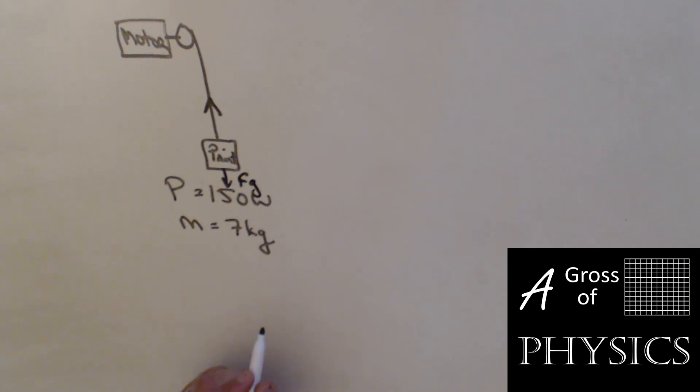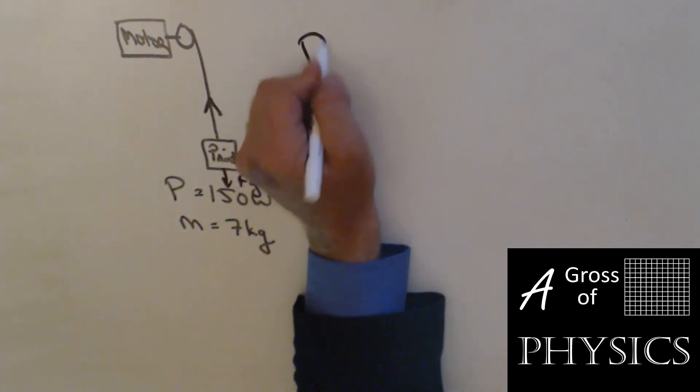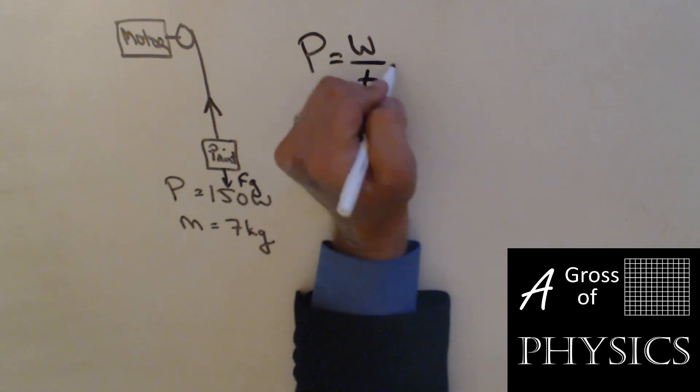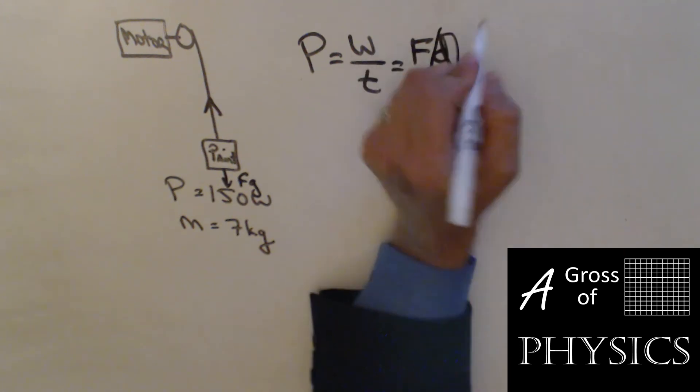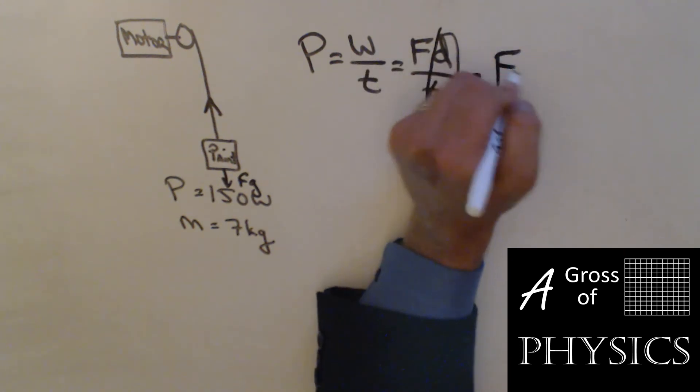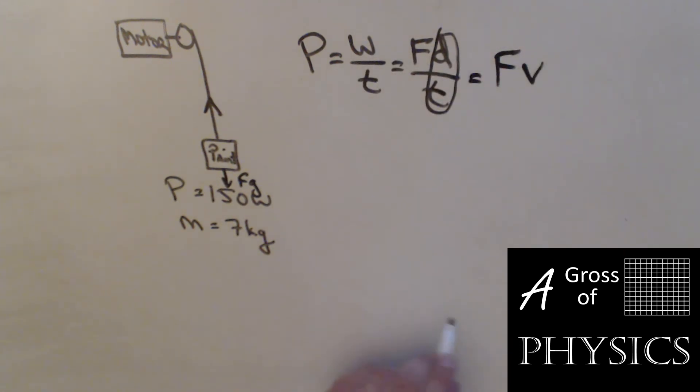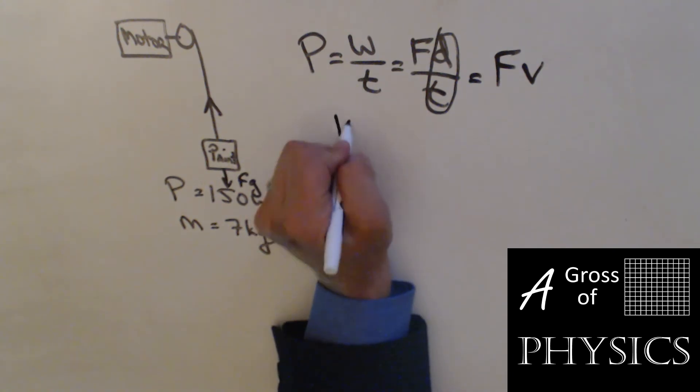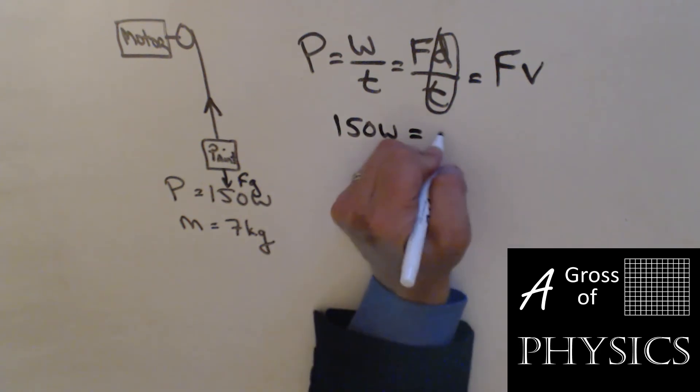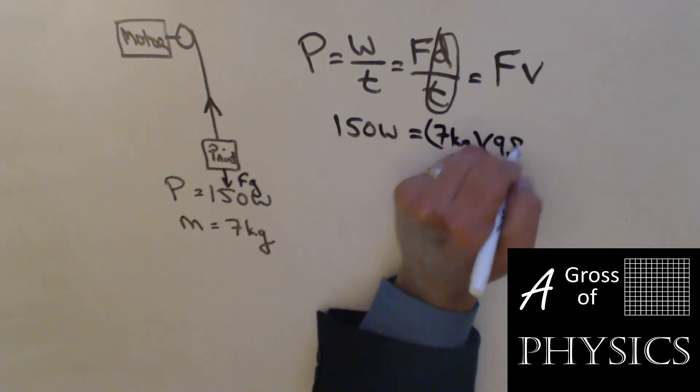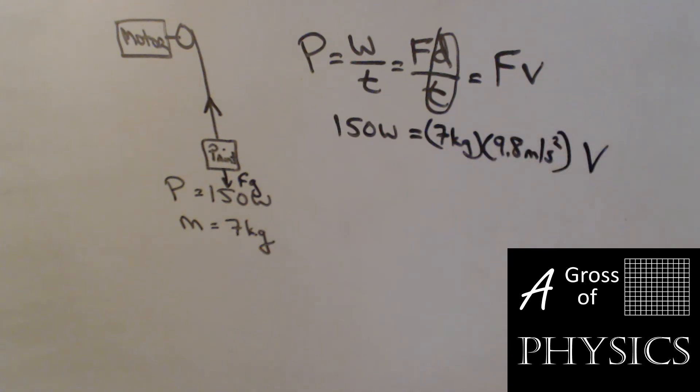What we can do is remember power is work over time, which is force times distance over time. Distance over time is velocity. So what we can do is use the power that we have, 150 watts, equals the force I need to overcome, which is 7 kilograms times 9.8, and I can multiply that by V.